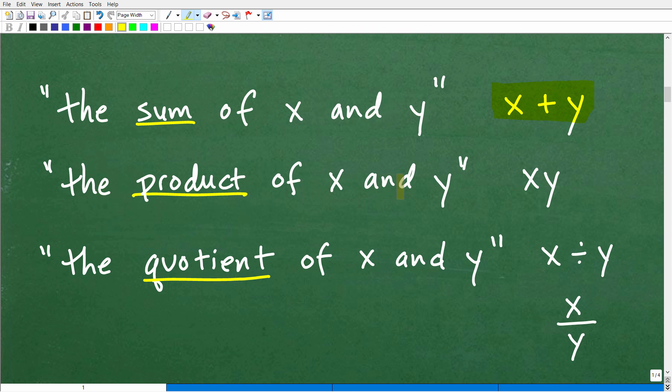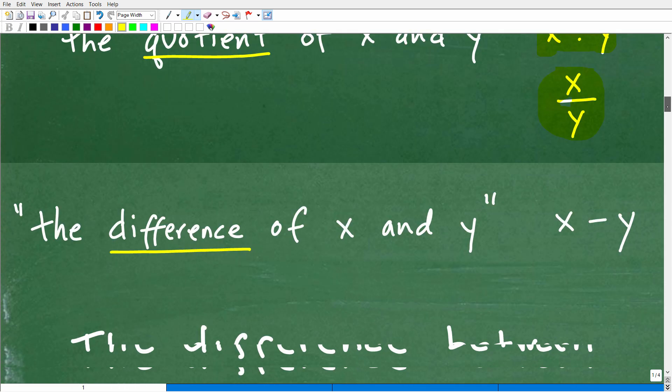All right, how about the product of x and y? Well, the product of x and y is x times y. All right, so our x times y, we can write that as the product of x and y. Now, the quotient of x and y is x divided by y, right? And you can write it this way as well, x divided by y. This is the quotient of x and y. And now let's go ahead and take a look at the difference.